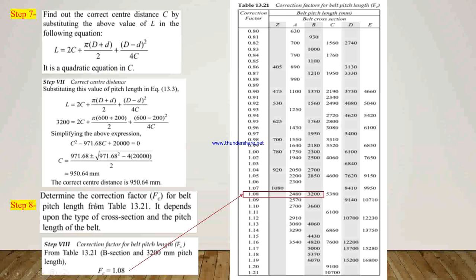In step 8, we determine the correction factor FC for the belt pitch length from table 13.21, which depends on the type of cross section and the pitch length. For belt section B with a pitch length of 3200 mm, we read from the table that FC = 1.08.